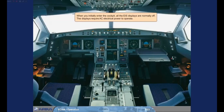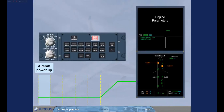When you initially enter the cockpit, all the EIS displays are normally off. The displays require AC electrical power to operate. The engine warning display information is displayed on the upper ECAM screen, and the door Oxy system page is displayed on the lower ECAM screen. The door Oxy page is what the ECAM system will automatically display because you are on the ground with the doors open.